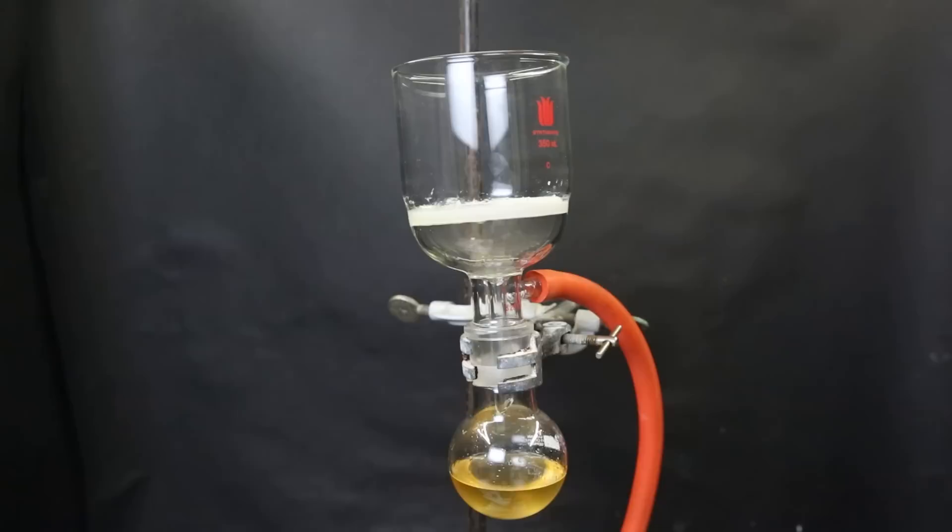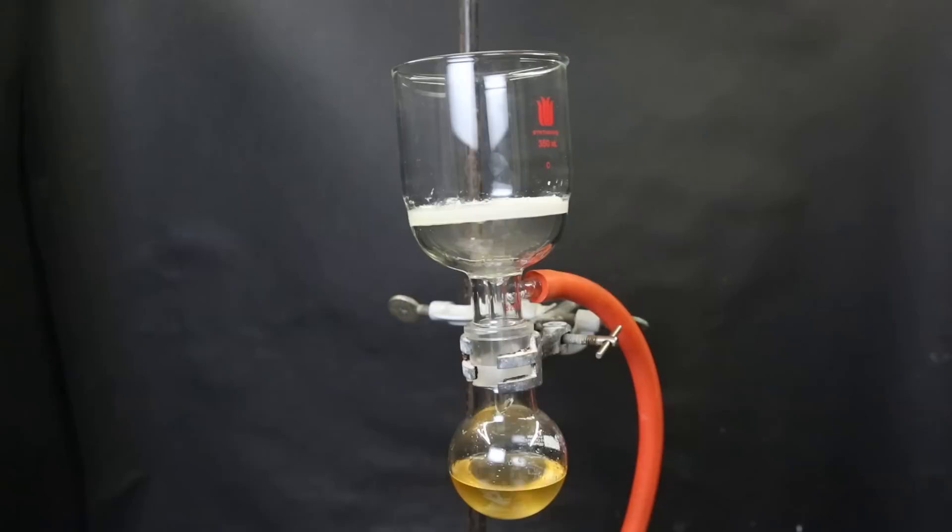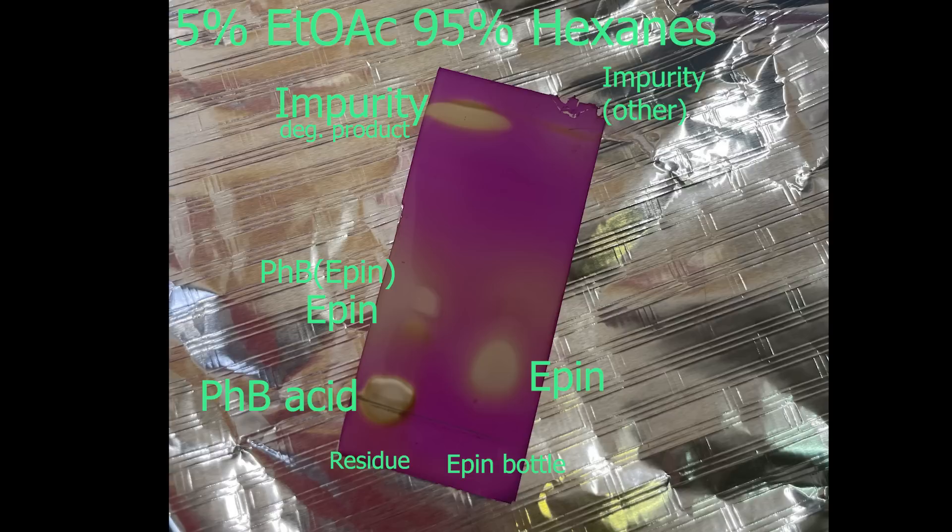I then collect some of the residue and test it with TLC to see what it is. At first, I thought it was epin, but the TLC tells us that it is mostly phenylboronic acid. On the left is a residue that I collected, and on the right the pure epin that I made. We see that the spot that corresponds with epin is actually very small on the left. Since the solid wasn't dry and trapped some of the liquid, we of course also expect to see all of the other compounds of that liquid in the TLC. The thing is that the phenylboronic acid has a huge spot on the left, which is not the case when normally testing the liquid. This tells us that the solid is mostly phenylboronic acid that crystallized out. We also see a very large spot at the top, which is the degradation product of phenylboronic acid again. Now that I have a better idea of the components of my mixture, I can start separating them.